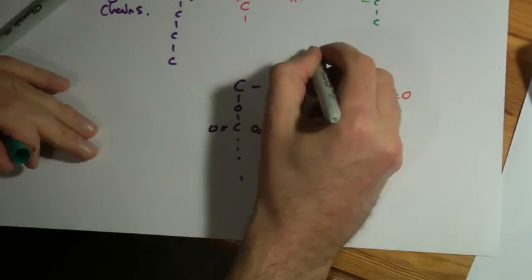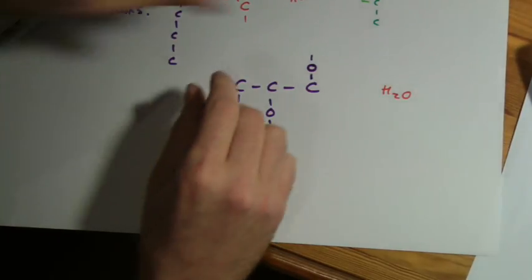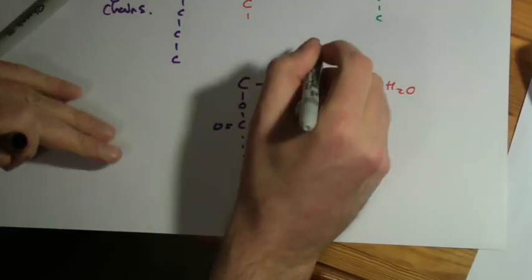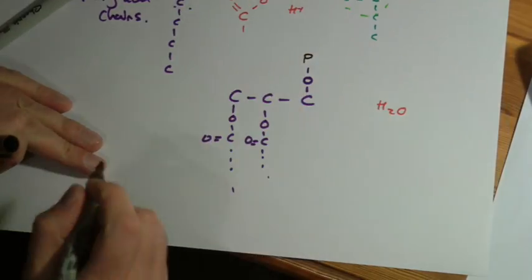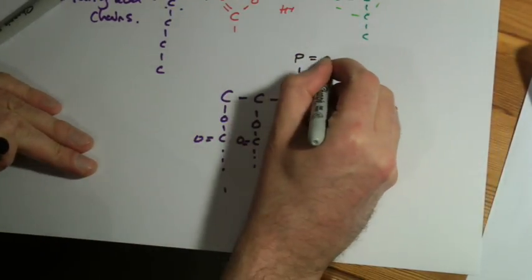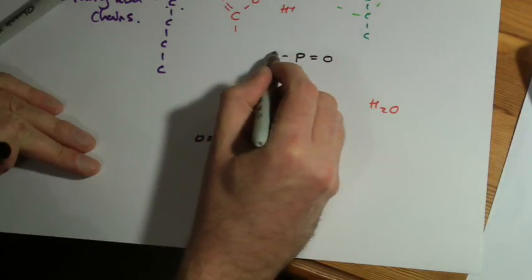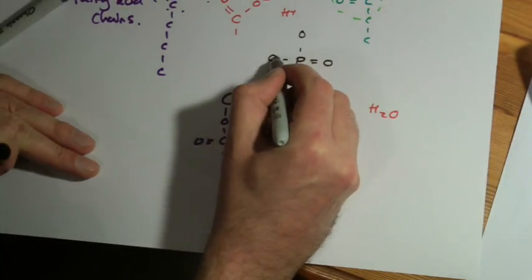I'll do it in brown. So the phosphate is P with a double bonded oxygen, another oxygen, and another oxygen.